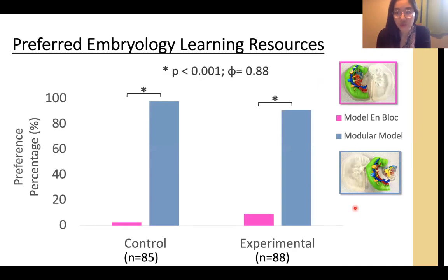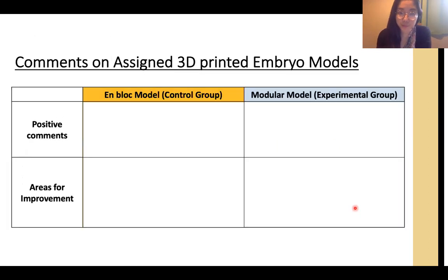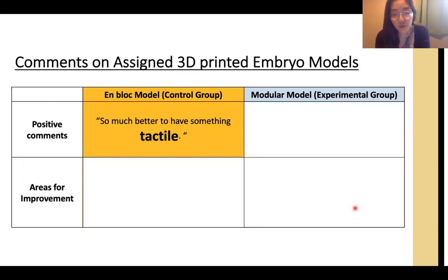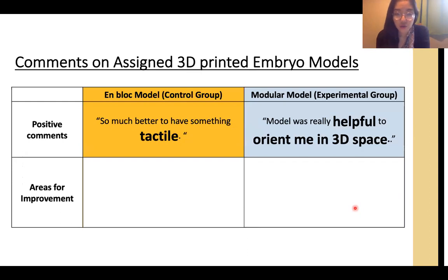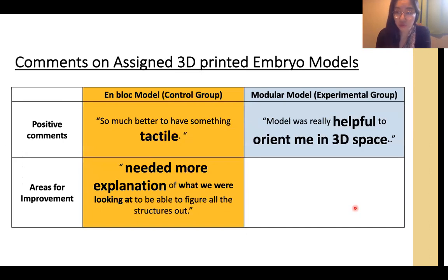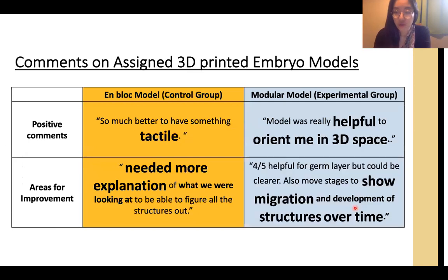Even though results showed higher learning outcomes for spatial items from interaction with the single-piece model, students still preferred the modular model. Thematic analysis of comments revealed that both groups similarly valued the tactile learning style and better visualization the models provided. Constructive themes were also similar: students wanted more tutorials such as video tutorials for using 3D printed models, and they wanted a clearer temporal dimension represented on the model.